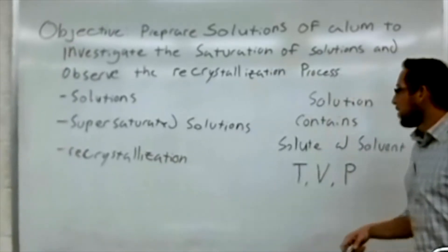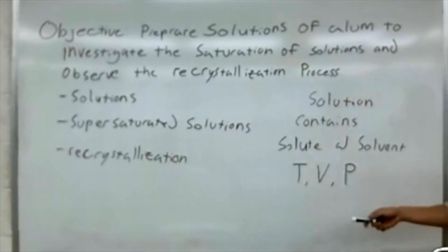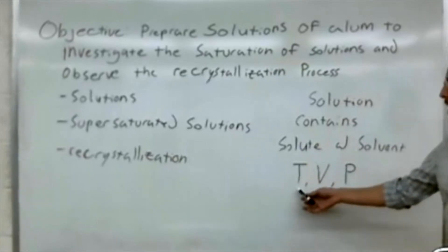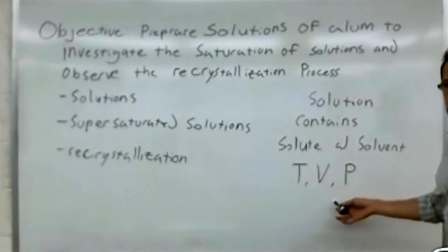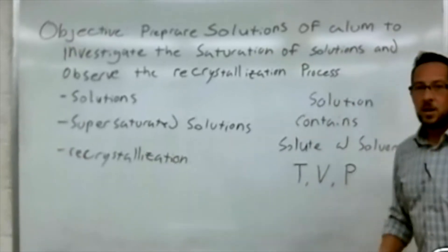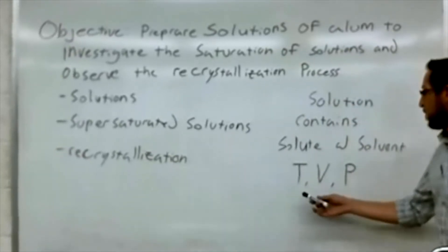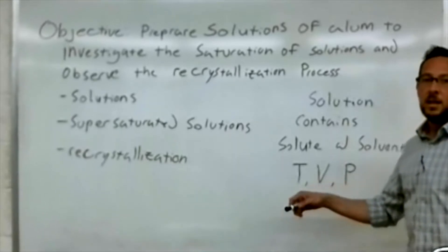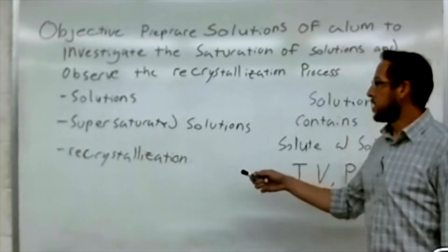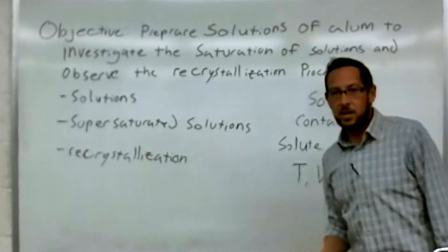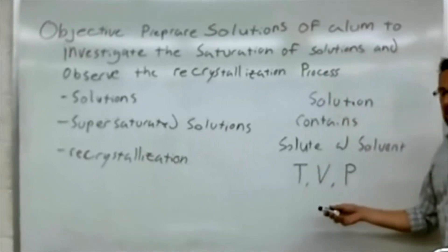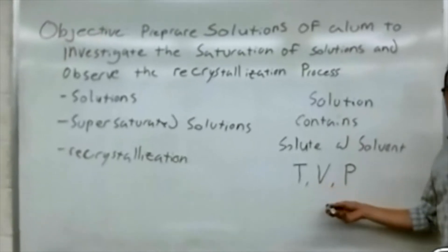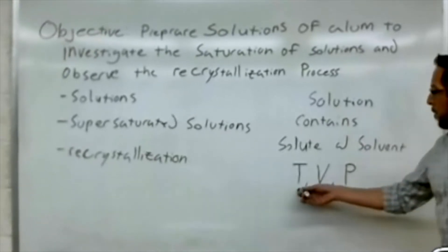So the amount of solute that you choose to dissolve into your solvent is dependent on your temperature, volume, and pressure. So by varying our temperature, volume, and pressure, we can come up with different saturation levels or concentrations in our solutes. Today, we will be holding our volume constant, our pressure constant, and we will be varying our temperature.